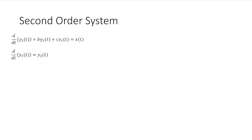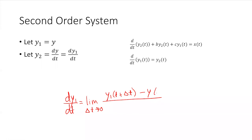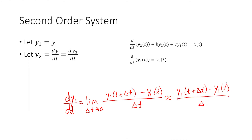How would I discretize these two equations? The key thing that allowed us to make discrete equations was the definition of the derivative: the limit as Δt goes to zero of [y(t+Δt) − y(t)] / Δt. We said this is approximately equal to the same finite difference expression when Δt is sufficiently small.